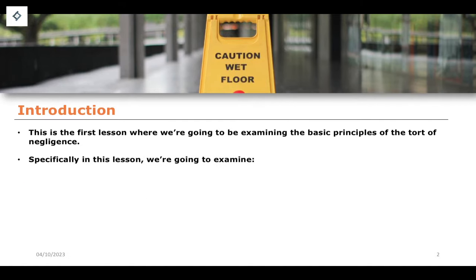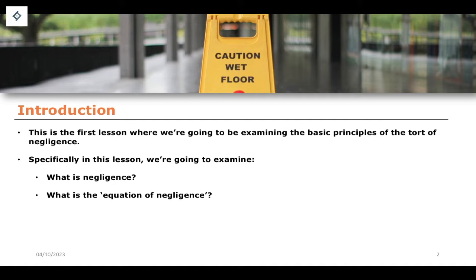We're going to examine three major issues in this lesson when we talk about the tort of negligence. We're going to ask the question of what negligence actually is and come up with a clear, delineated, and descriptive definition. What is the equation of negligence? What are the key components required to show negligence or to have a successful negligence claim? And then finally, why is negligence so important? This will provide a basic overview to the subject of negligence, its key components, and its impact and importance in the law of tort to this day.